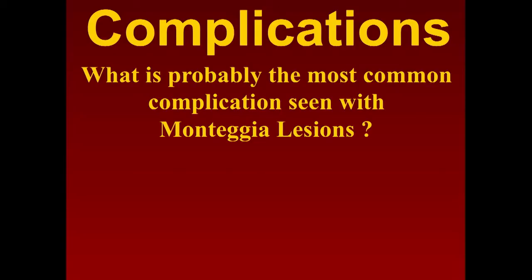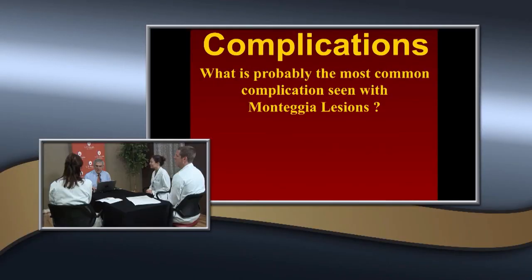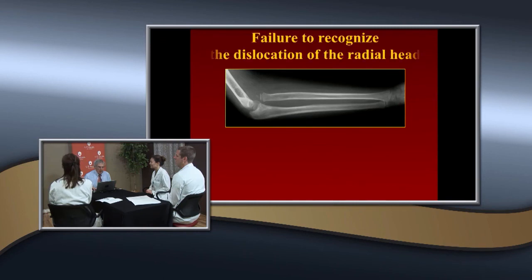In summary, we've reviewed all four types. If treated correctly, most complications can be avoided. However, someone else may have treated the injury and sent the patient to you with a complication. The most common complication in Monteggia lesions is failure to recognize the radial head dislocation — either no fracture was detected, attention was directed only to diaphyseal fractures, or inadequate radiographs were obtained.